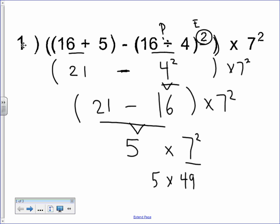5 times 49 is the last thing to do. I'll do it over here on the side. 5 times 49, 245. Box the answer.